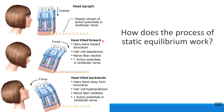If our head starts to bend forward, the otoliths get pulled forward as well. As they're pulled forward, they push open the mechanically gated channels on the hair cells, causing the hair cells to send a lot of messages — so when your head tilts forward, we send more messages than normal. When your head tilts backward, the opposite is true: the otoliths are pulled back and pull shut those mechanically gated channels, so we send many fewer messages than when our head is upright.